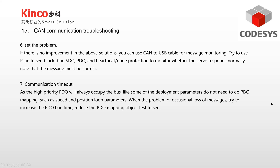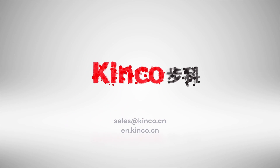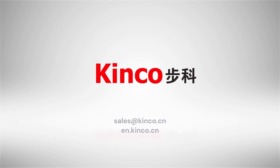Note that the messages must be correct. Regarding communication timeout: since high-priority PDOs will always occupy the bus, some deployment parameters do not need PDO mapping — such as speed and position loop parameters. When messages are lost, try increasing the PDO inhibit time and reduce the PDO mapping objects. Thanks for watching. If you have any questions, please contact Kinko.